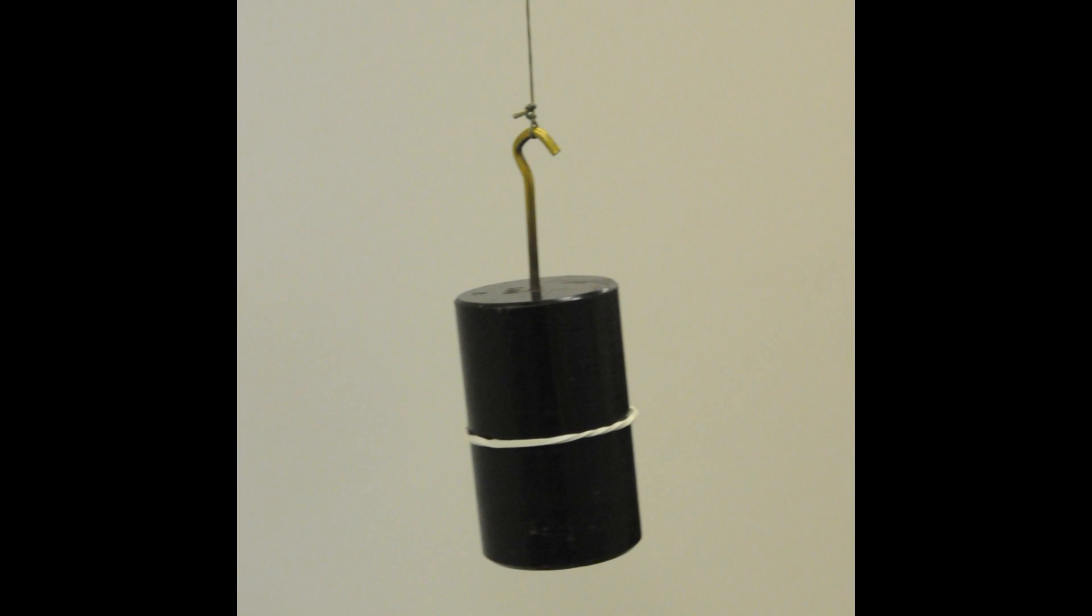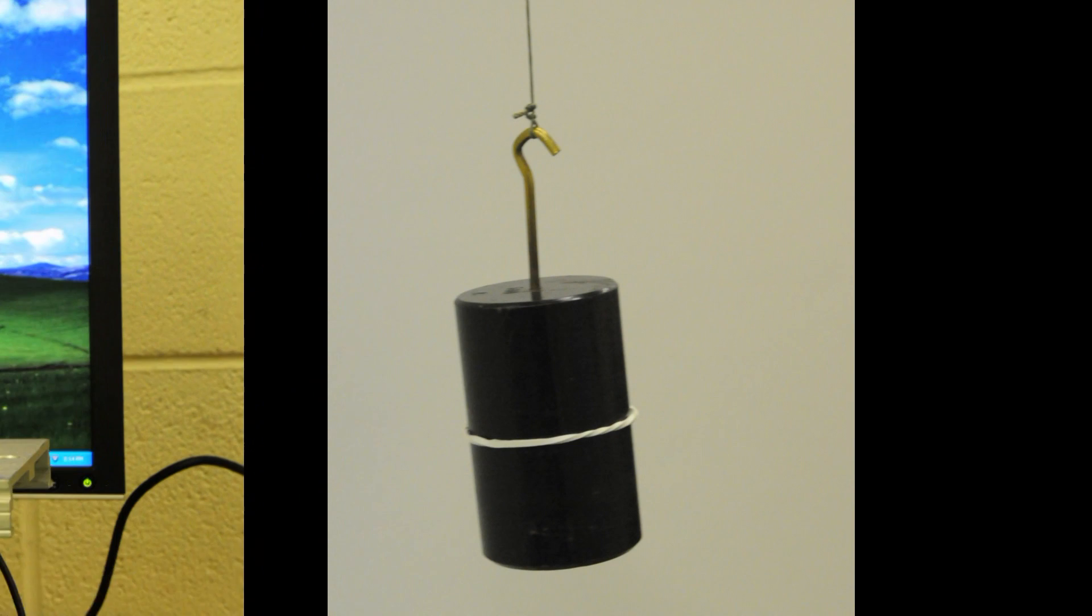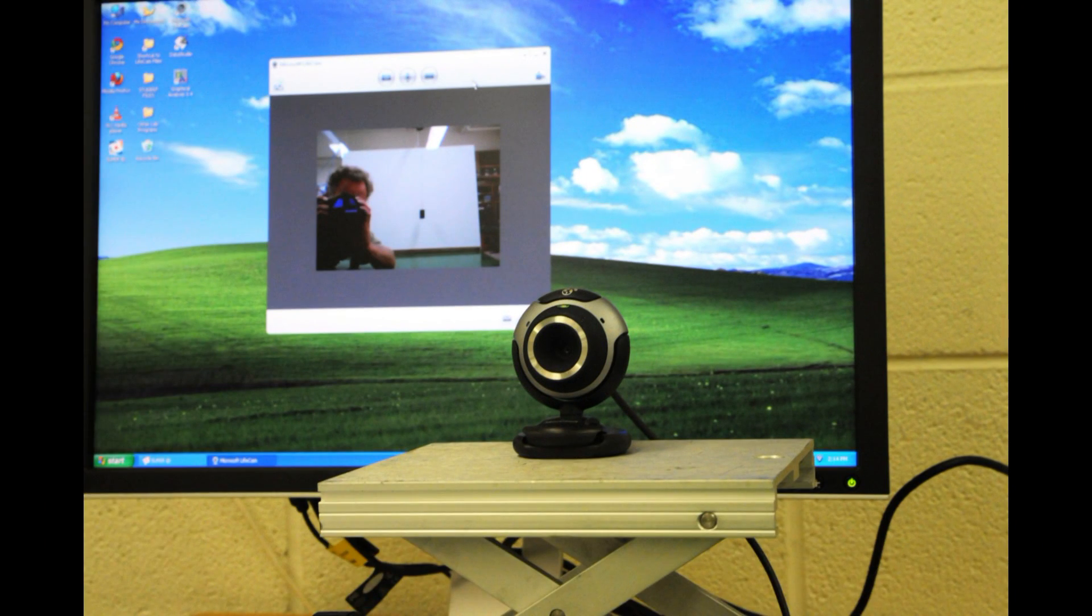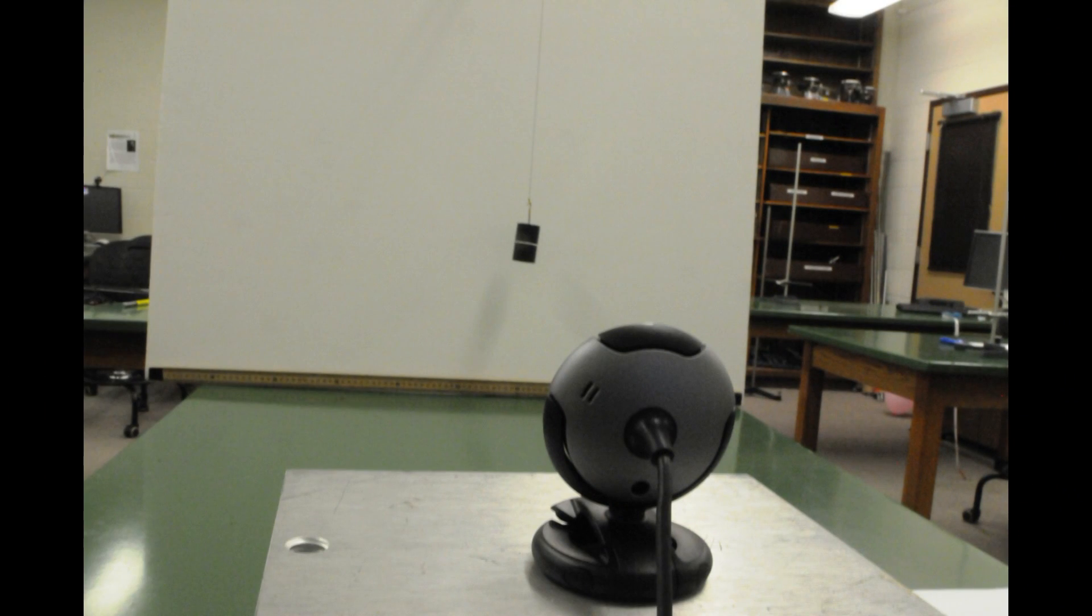Begin the experiment by hanging a pendulum in front of the white poster board screen. Here we've put a white rubber band around the middle of the black pendulum bob for easy location of the center of the bob in subsequent video clips. Place a webcam on a jack stand at one end of the table.